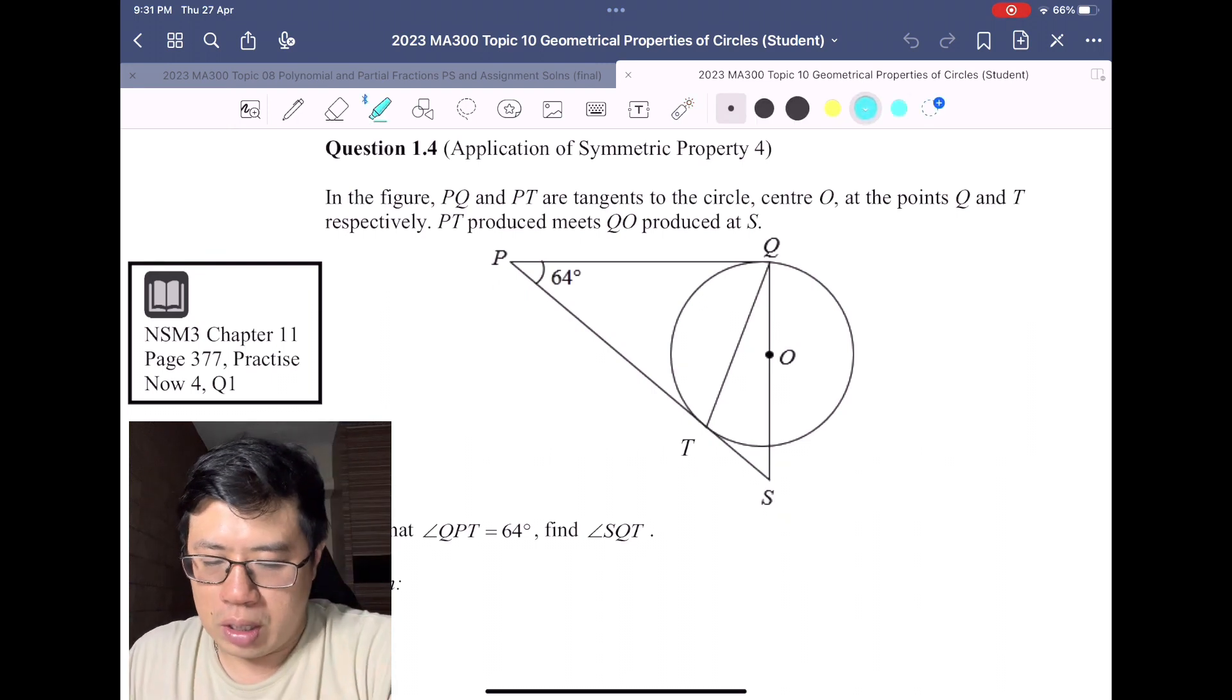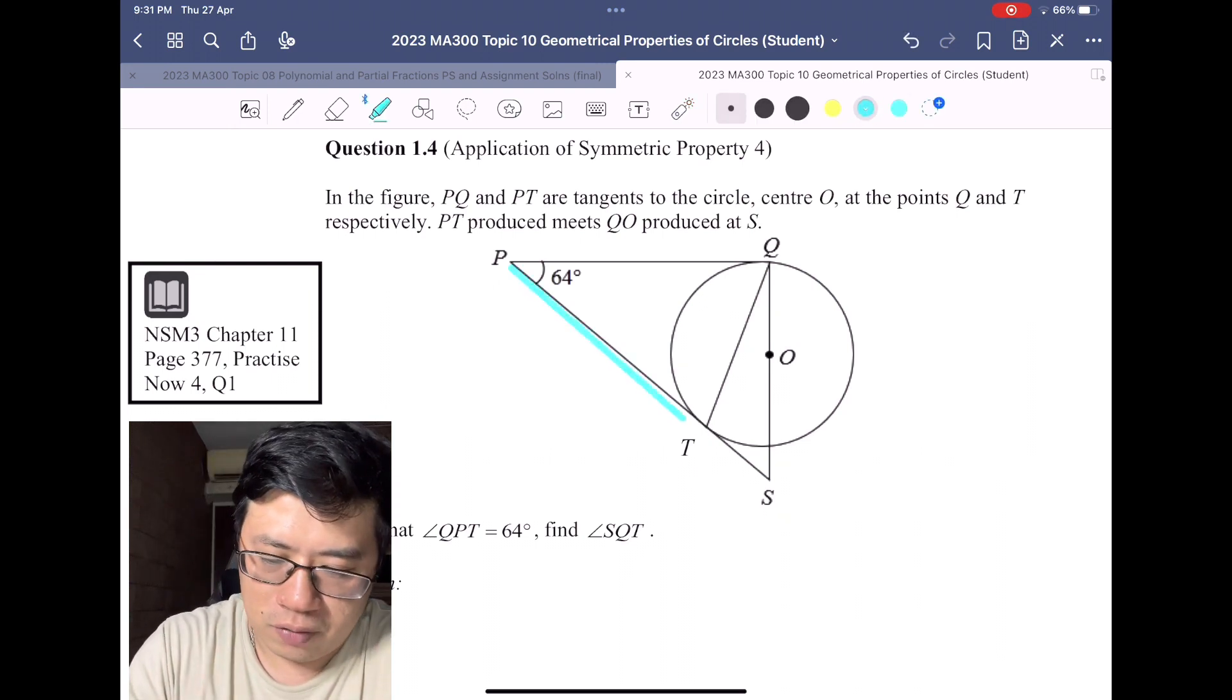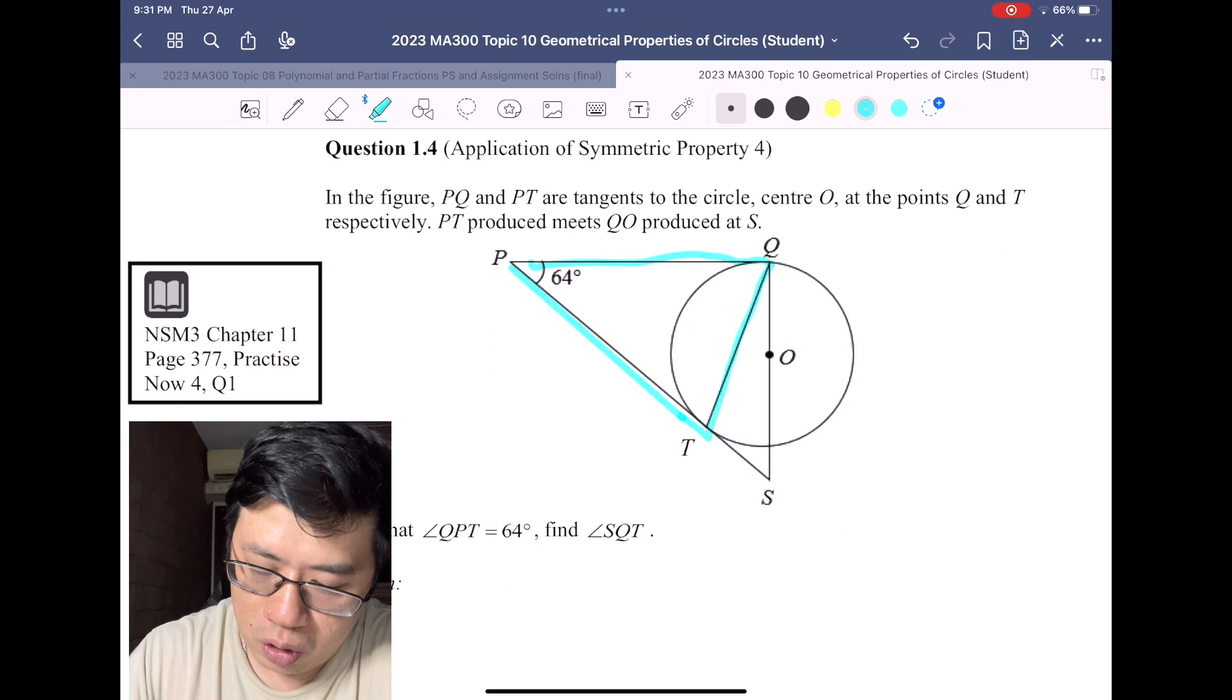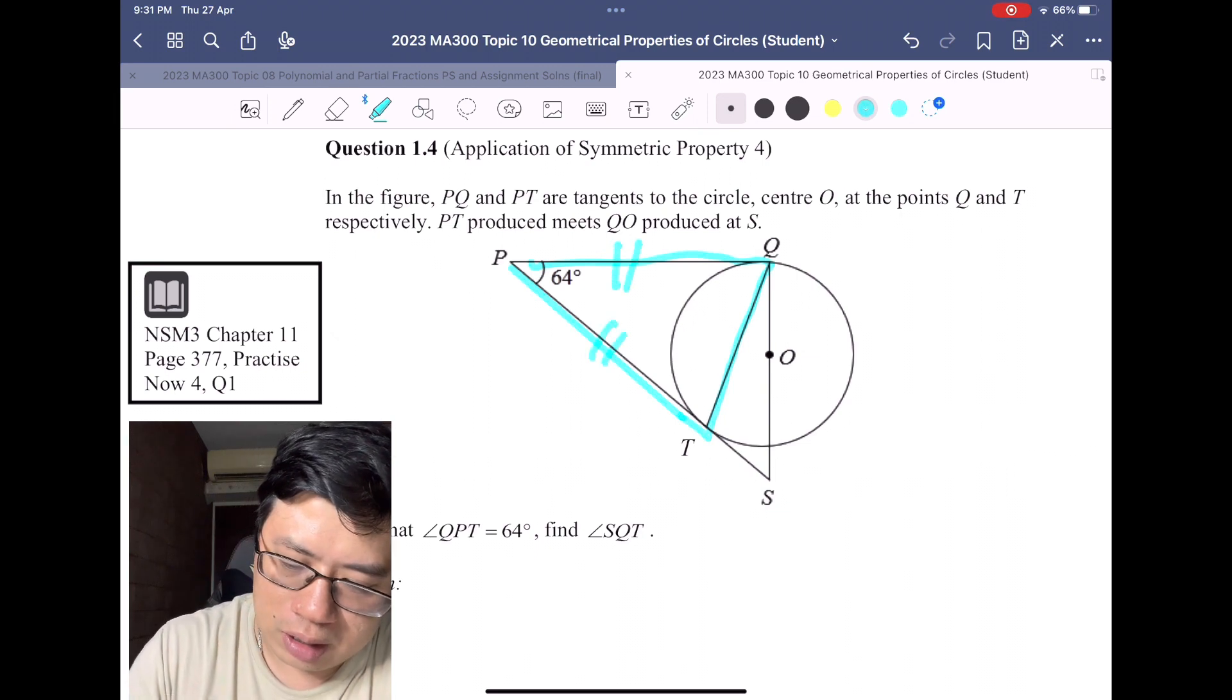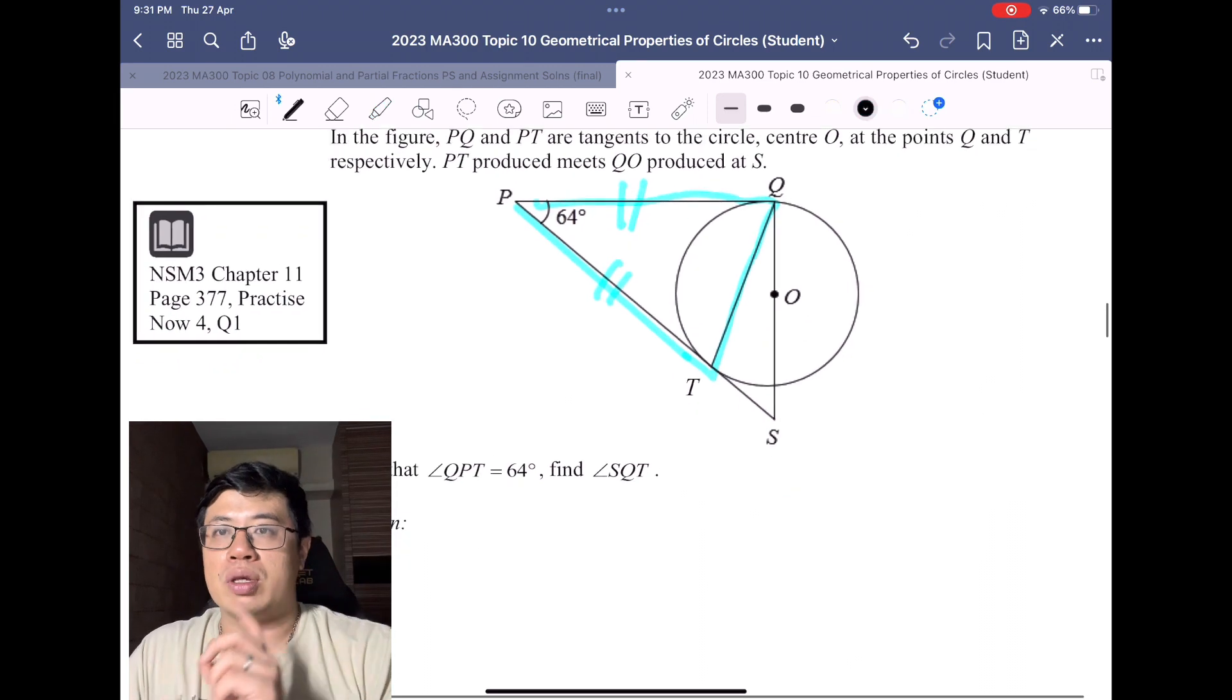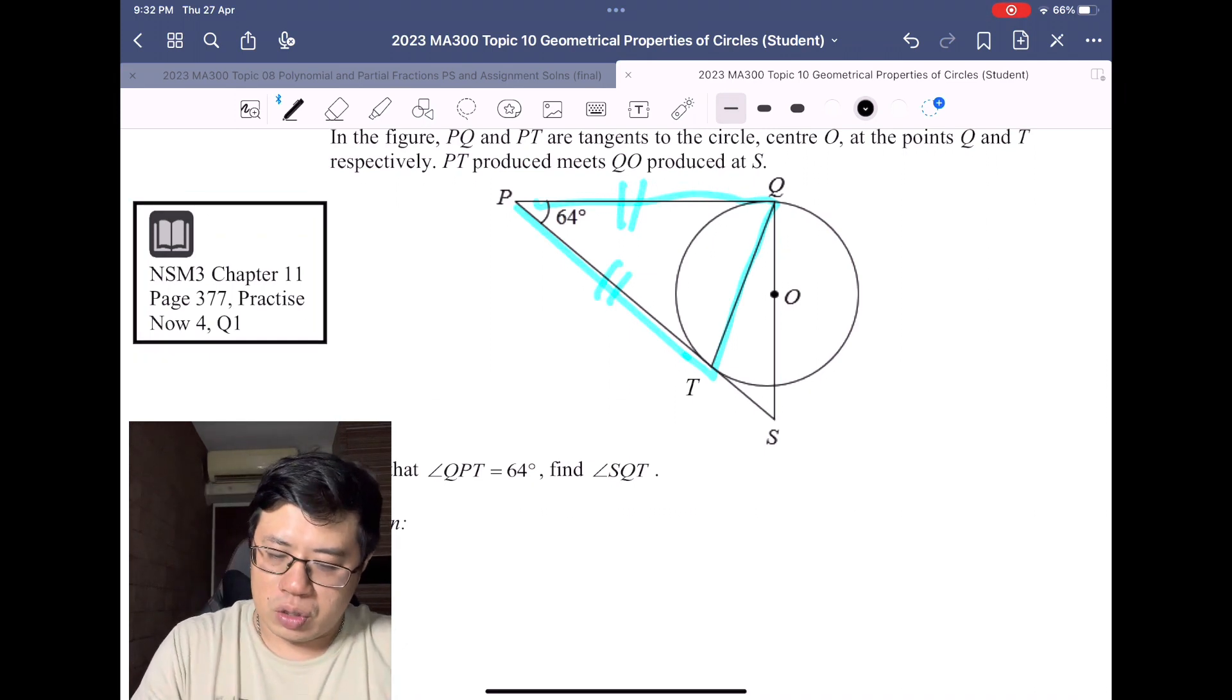If we just observe this triangle itself, we can see that this triangle has two tangents shooting from an external point, so these two will be equal.